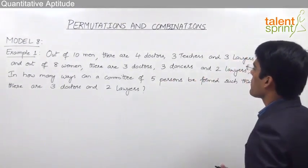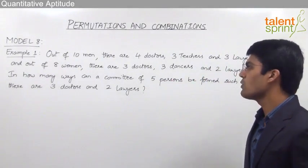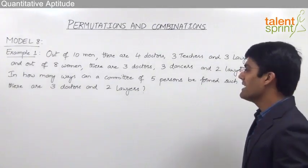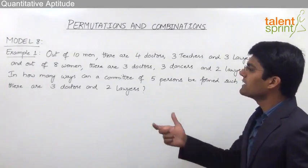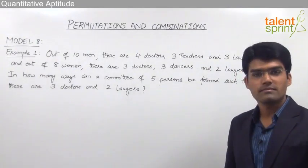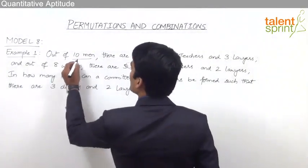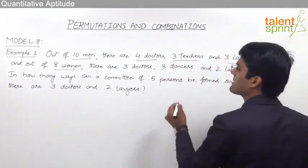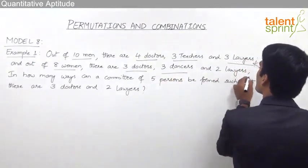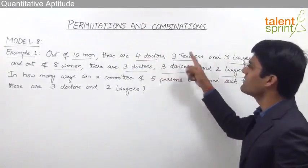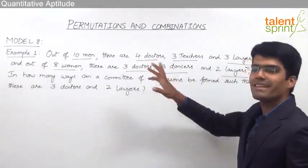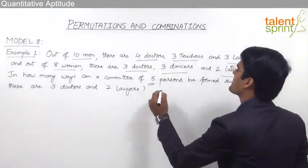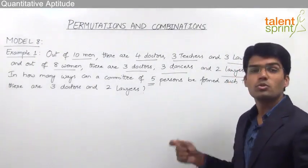Out of 10 men there are 4 doctors, 3 teachers and 3 lawyers, and out of 8 women there are 3 doctors, 3 dancers and 2 lawyers. In how many ways can a committee of 5 persons be formed such that there are 3 doctors and 2 lawyers? So altogether we have 10 men and 8 women, a total of 18 persons, and we need to form a committee of 5 persons with 3 doctors and 2 lawyers.